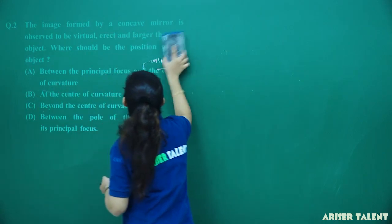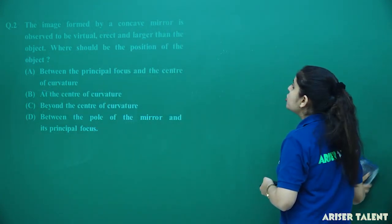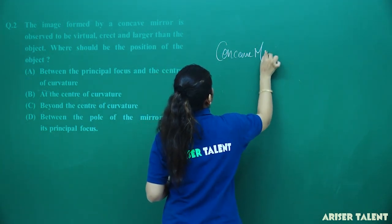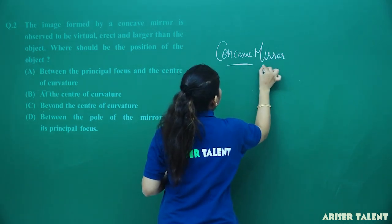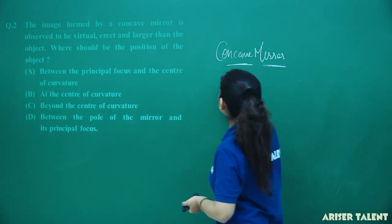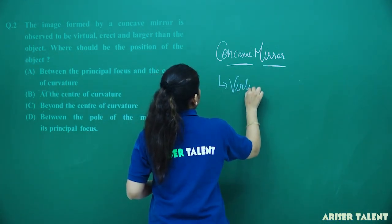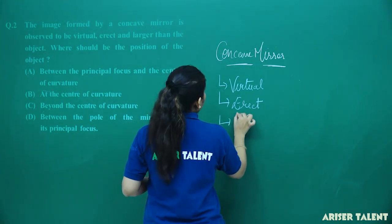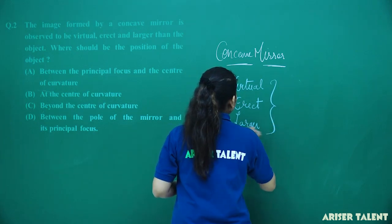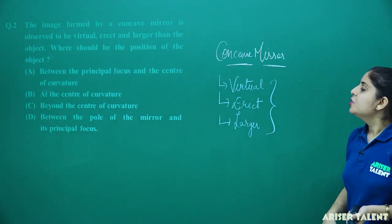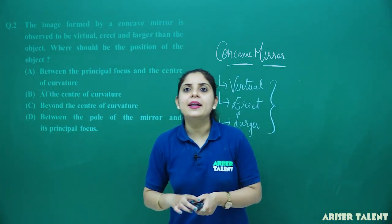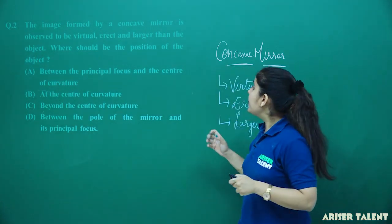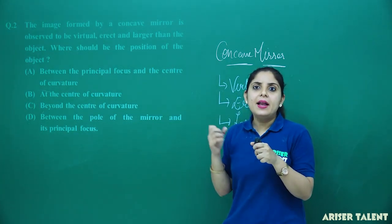The image formed by a concave mirror is observed to be virtual, erect, and larger than the object. You are given a concave mirror, and the specifications of the image formed are: virtual, erect, and enlarged. So what will be the position of the object? If you are getting a virtual and erect image, you have to place the object between the principal focus and the pole of the mirror to get the enlarged image.